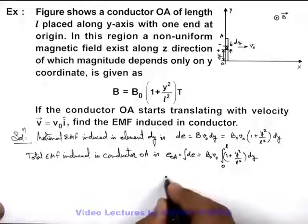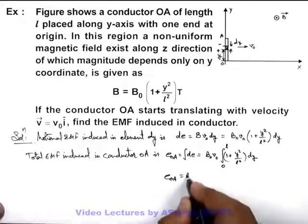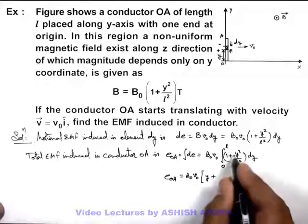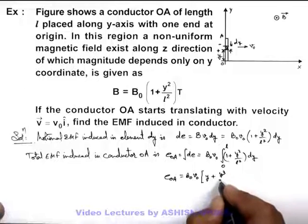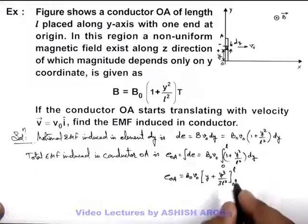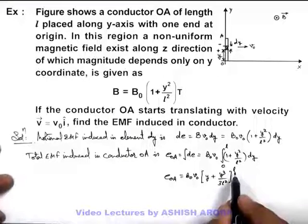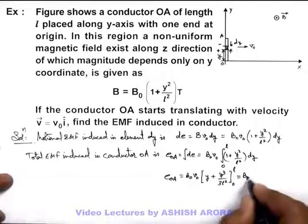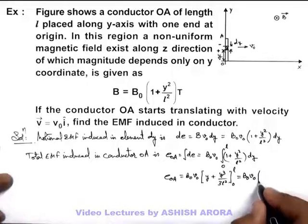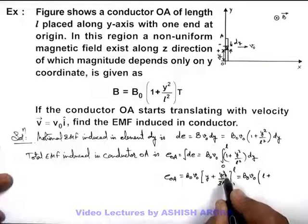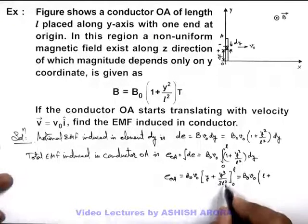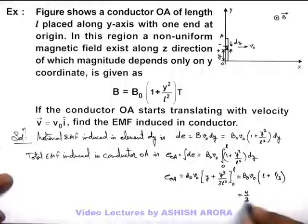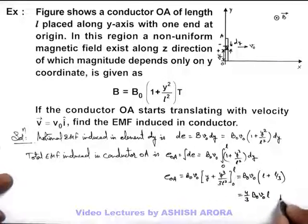If we integrate it, E_OA is given as B₀V₀ times—the integration of 1 will be y, and that of y² is y³/3, so this is y³/(3l²), and limits we put from 0 to L. If we substitute the values of limits in this integral value, this is B₀V₀ multiplied by [L + L³/(3l²)] = L + L/3. On simplifying, we get the value (4/3)B₀V₀L. That's the result of this problem.